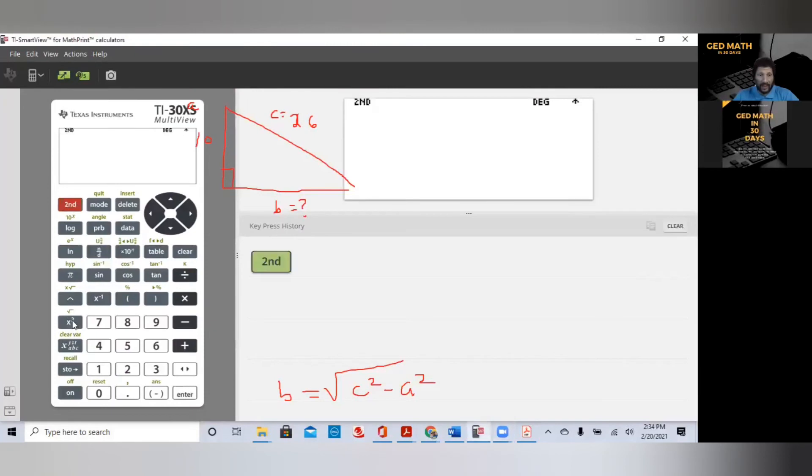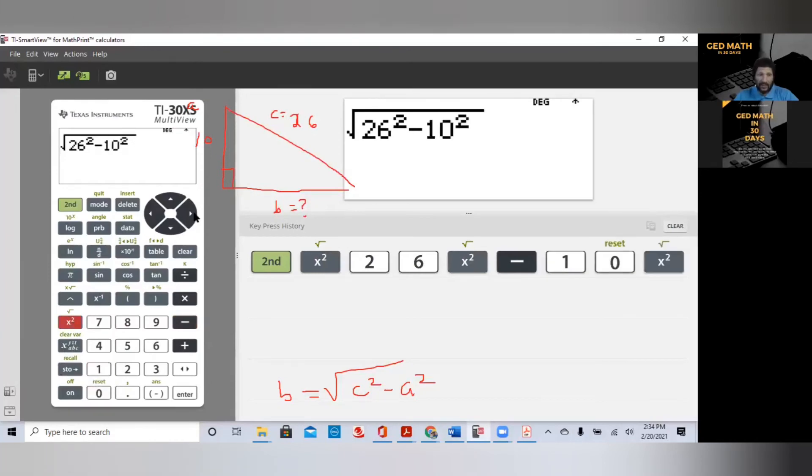So, since we don't know B, we're going to use the formula B equal to square root of C squared minus A squared. Watch how easy it is. So, here we hit second. We hit the square root button. C squared is 26, I mean, C is 26. So, 26 squared minus side A is 10. So, 10 squared. We get out of our square root. We're done. The missing leg is 24. That easy.